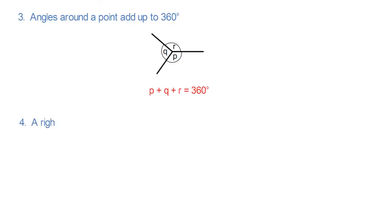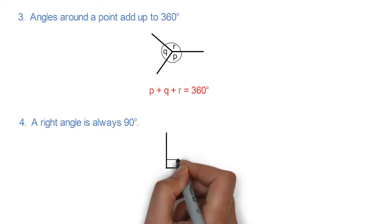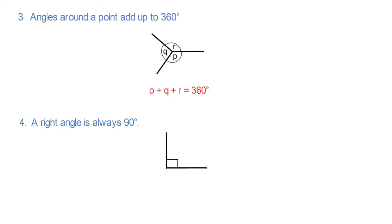Point 4. A right angle is always 90 degrees and it will be indicated as shown in the diagram.